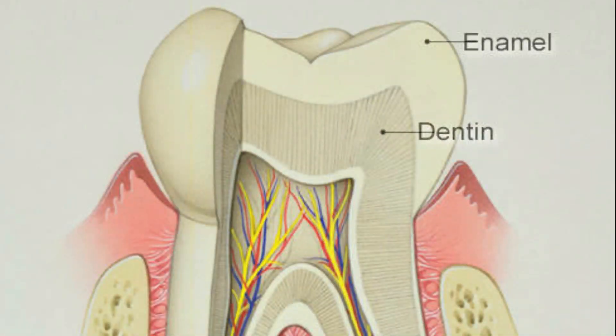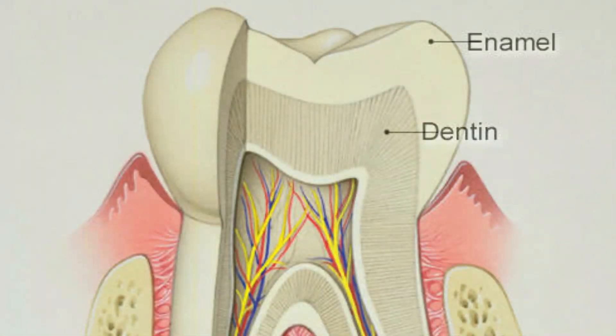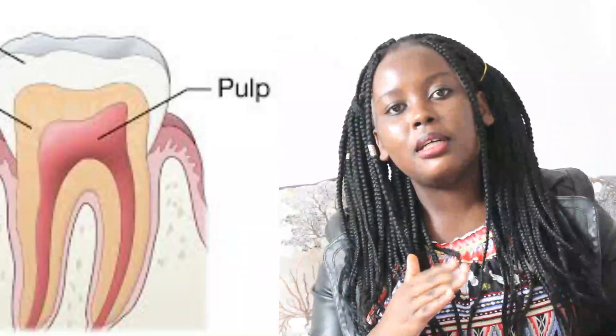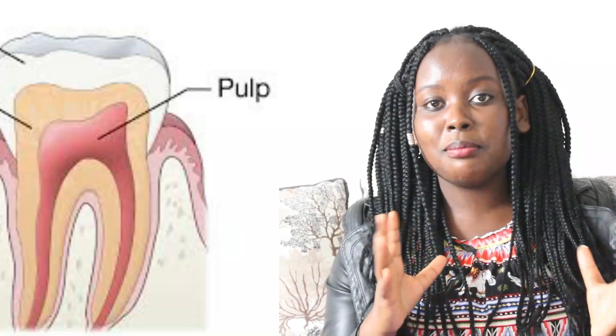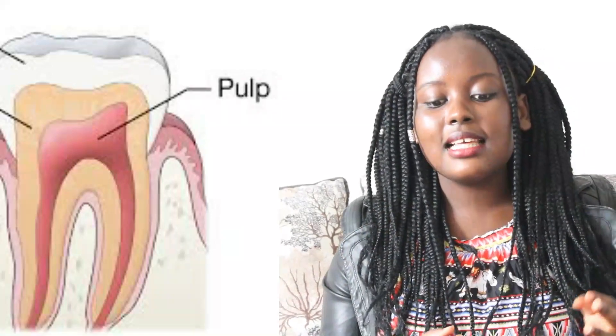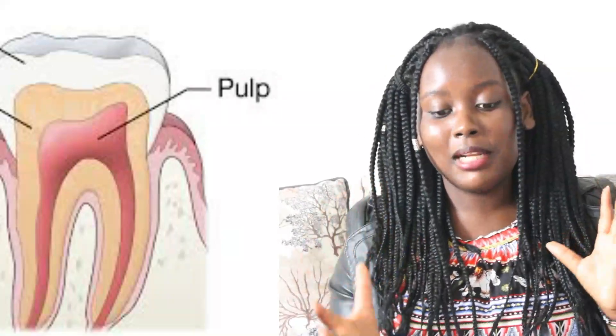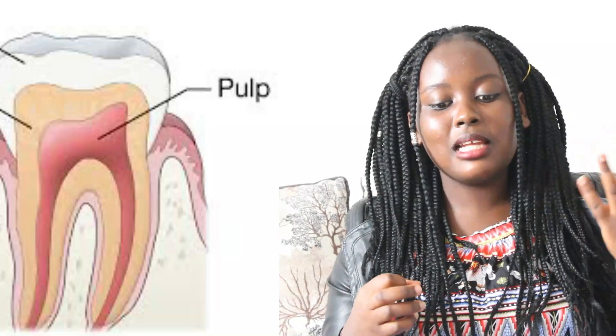The enamel is the hard, protective outer layer used for covering the crown. The second layer is the dentine, which is the second protective layer that also covers the nerve of the tooth. Then we have the pulp, also known as the nerve — this is the soft middle part of the tooth that supplies blood, as it has blood capillaries and nerve endings.